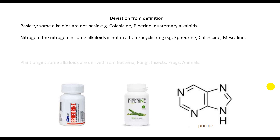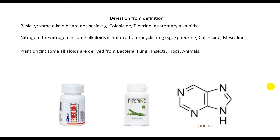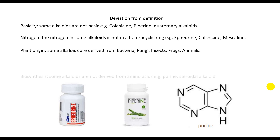Examples of alkaloids where nitrogen is not in a heterocyclic ring include ephedrine, colchicine, and mescaline. Regarding plain origin: some alkaloids are derived from bacteria, fungi, insects, frogs, and other animals.